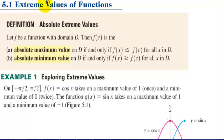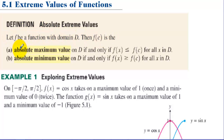Section 5.1: Extreme Values of Functions. We have a definition of absolute extreme values. Let f be a function with domain D. Then f(c) is the absolute maximum value on D if and only if f(x) is less than or equal to f(c) for all x in D.